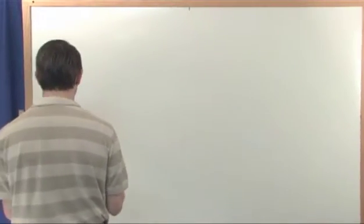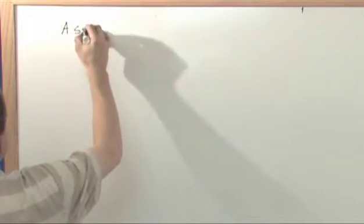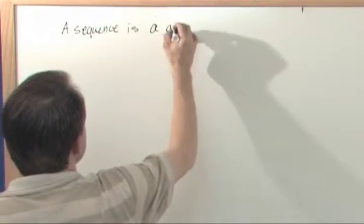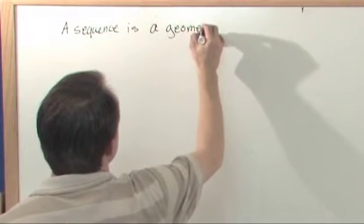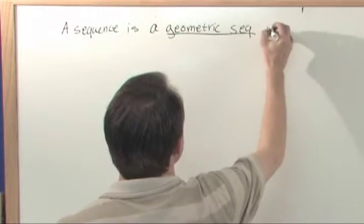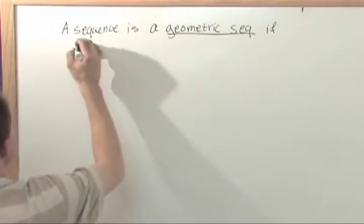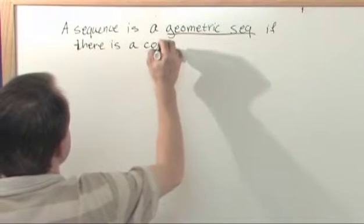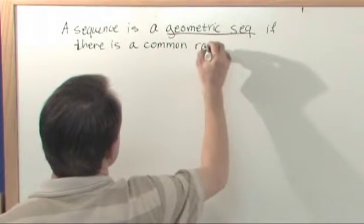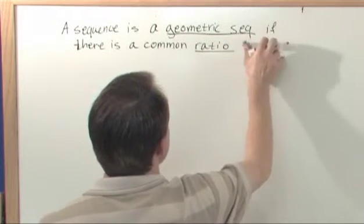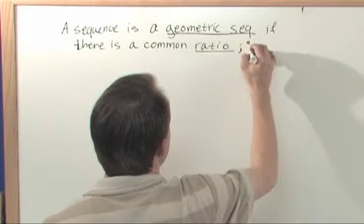So let's just get started and kind of write this down and work on up to it here. So a sequence is a geometric sequence if there is a common ratio, which I'll talk about in a minute, between... I'm going to call it a common ratio denoted R.